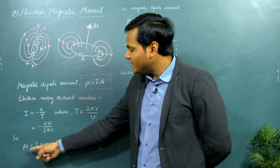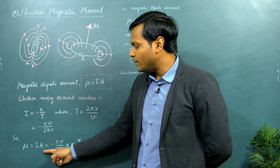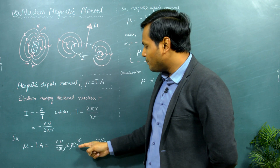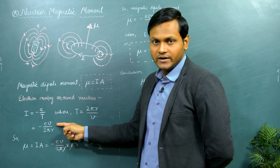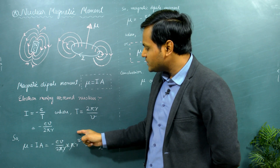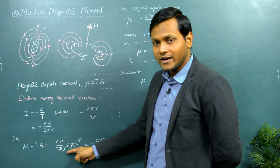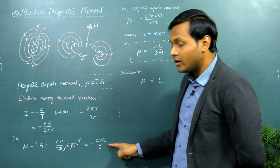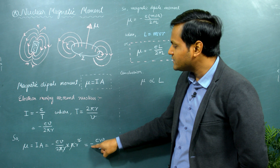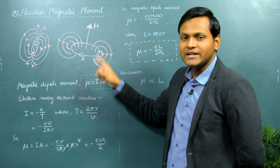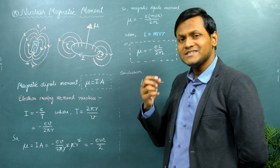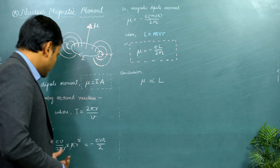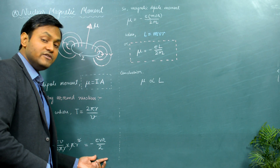Putting this expression for current I = ev/2πr into the magnetic moment formula — magnetic moment is basically current multiplied by area, where area is πr² — and canceling terms, we end up getting the magnetic moment equal to evr/2. There is a negative sign because we are talking about the electronic charge, which is a negative charge, so the magnetic moment is equal to -evr/2.